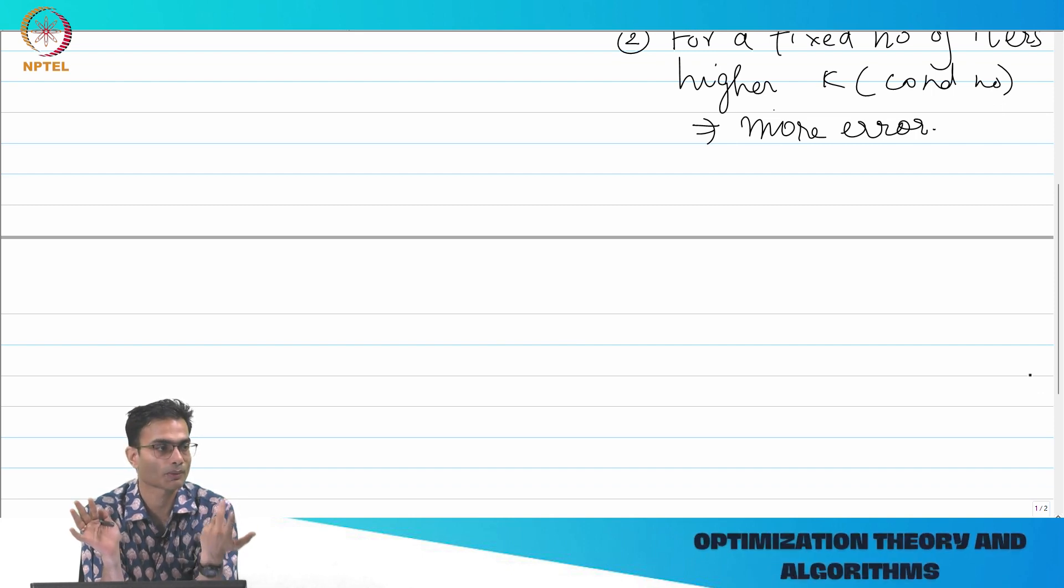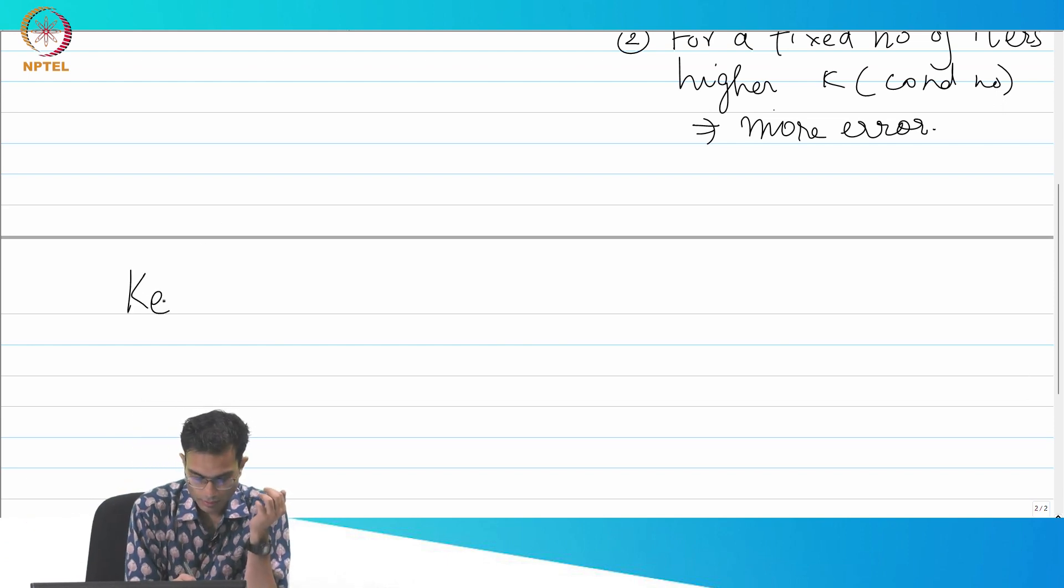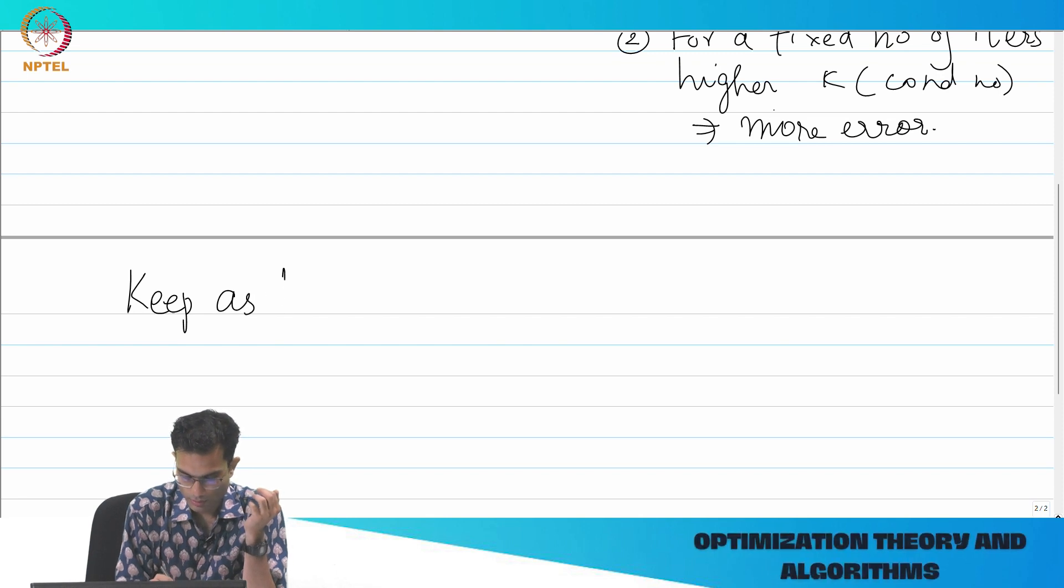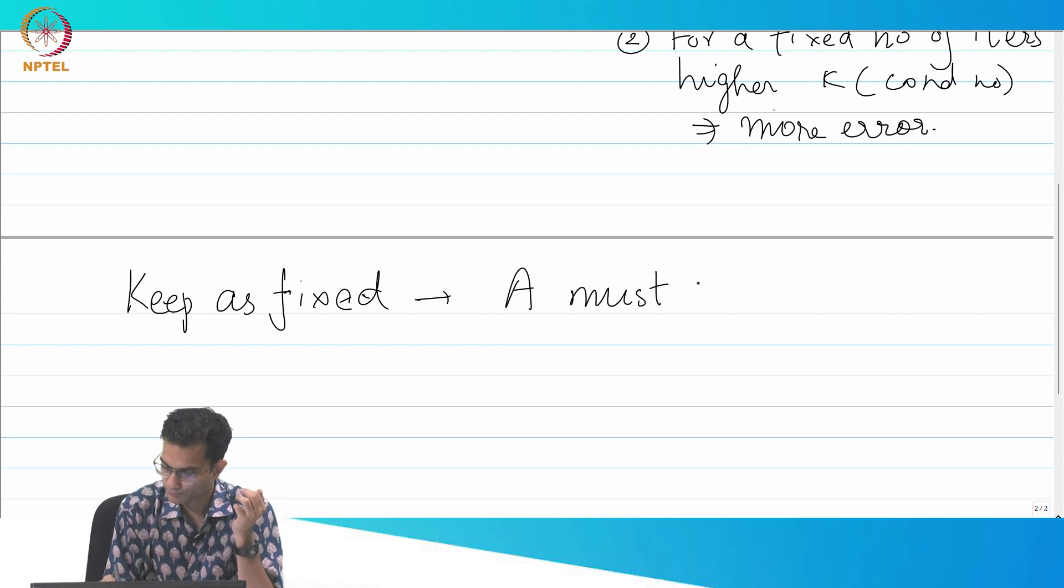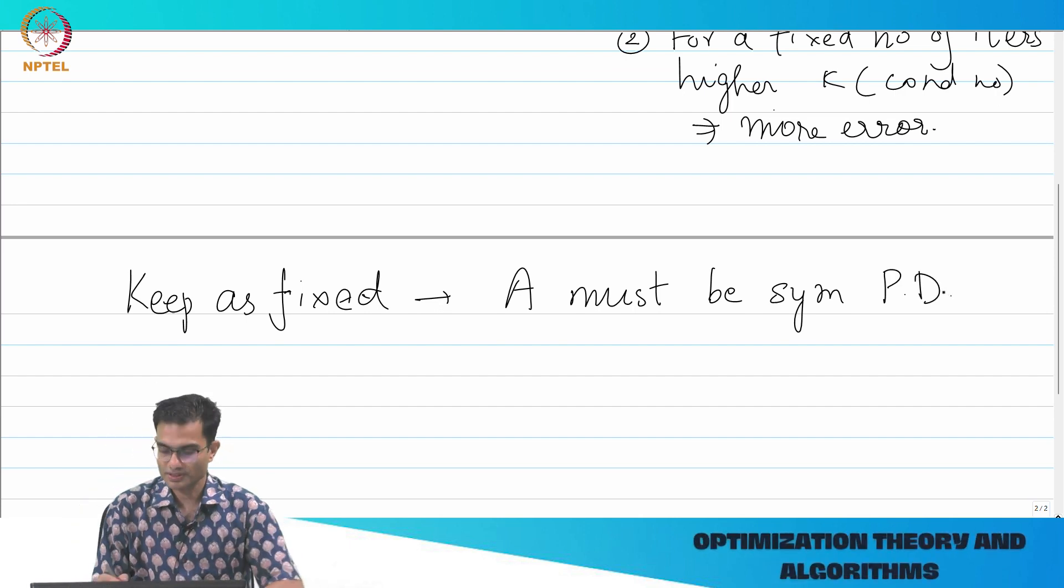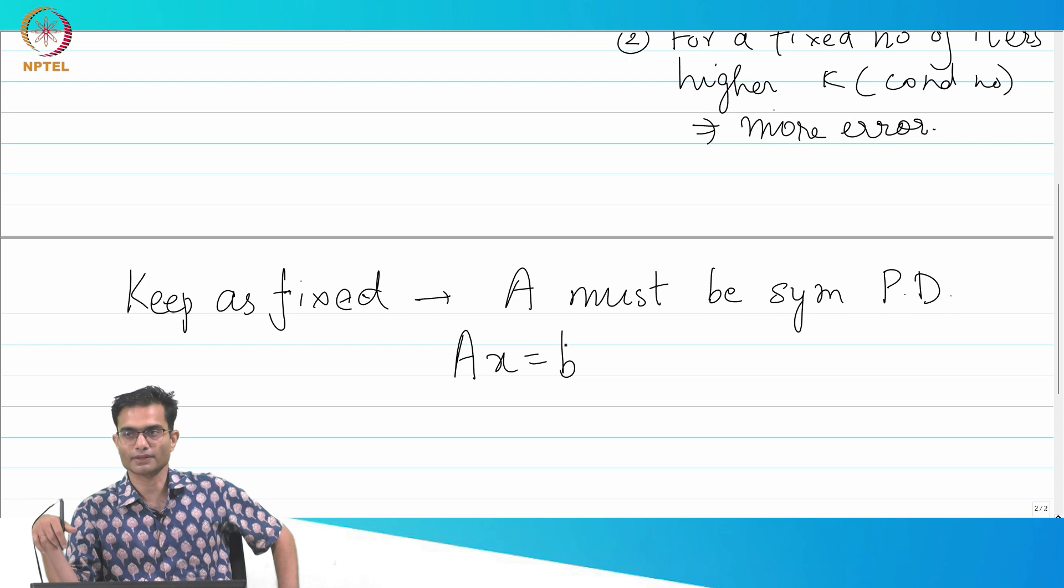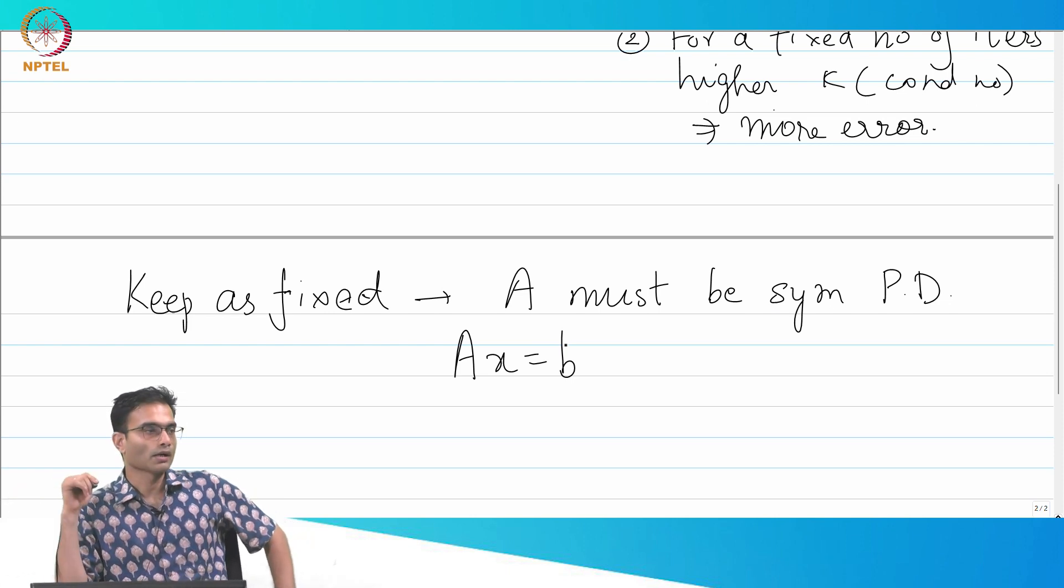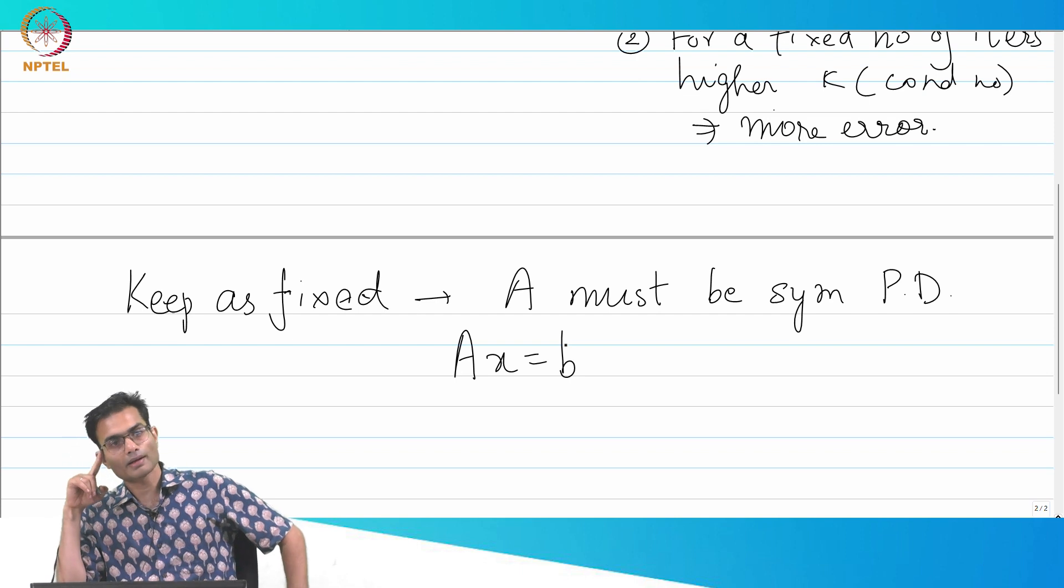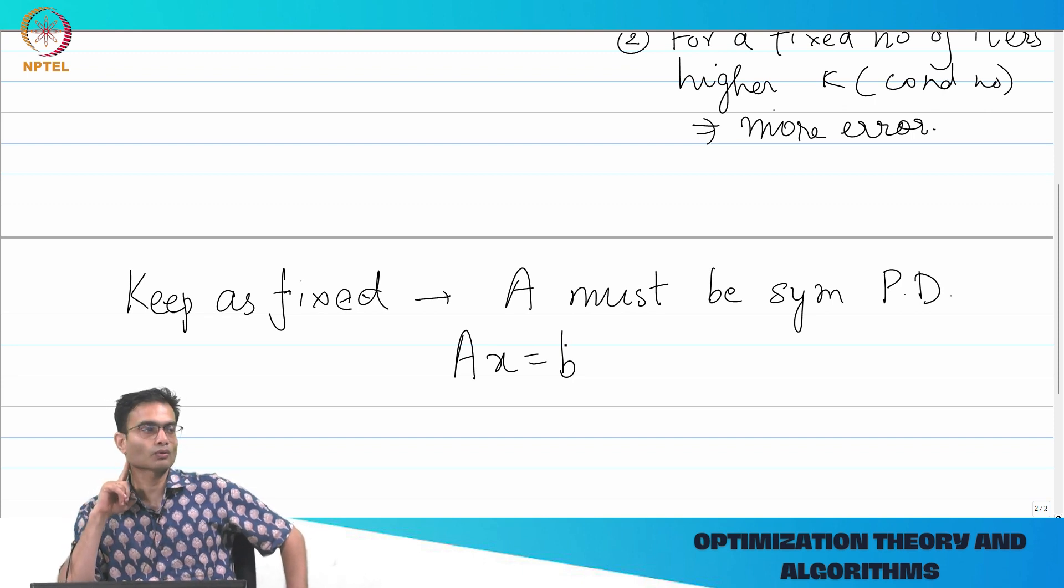Therefore, what is the limitation on A? What can I not sacrifice about A? Symmetric positive definite. Only then I can use the CG method that I have studied. Remember for CG what was I trying to solve? A x equals B, and we wrote that neatly as an objective function, as a quadratic form. Now, A has a bad condition number, I still want to use the CG routine in solving this, what could I possibly do?